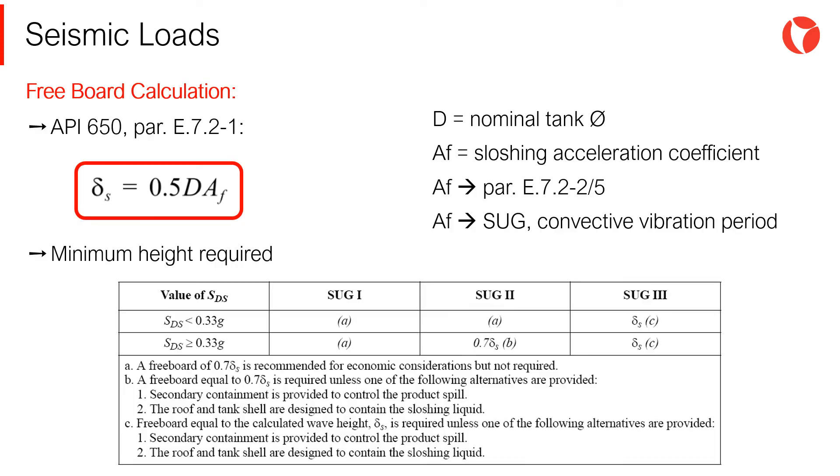This height above the liquid operation level to contain sloshing is determined by the equations of paragraph E7.2 and reproduced on screen. It is a function of the diameter of the tank and the sloshing acceleration coefficient. This coefficient depends among other things on the seismic user group SUG and on the frequency of convective vibration of the liquid.